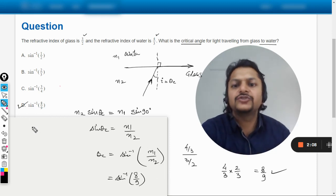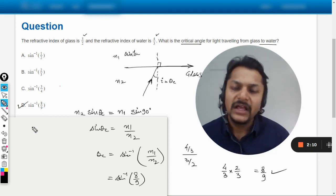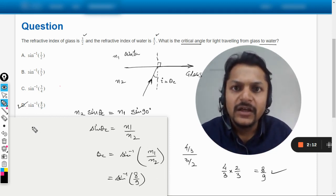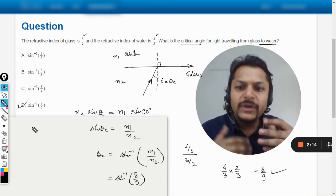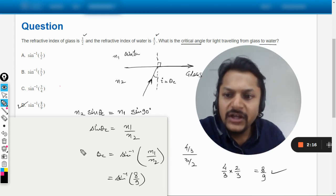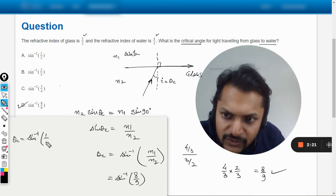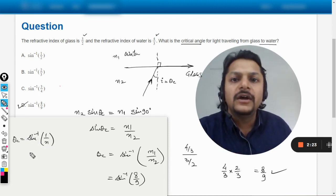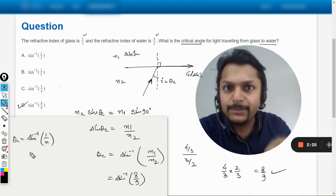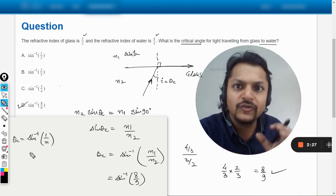Now my dear students, another thing in the data booklet, this formula will not be given there. They would be saying that theta critical is sine inverse 1 by n. Now the problem is how to adapt according to the data booklet because you people want to use the data booklet.